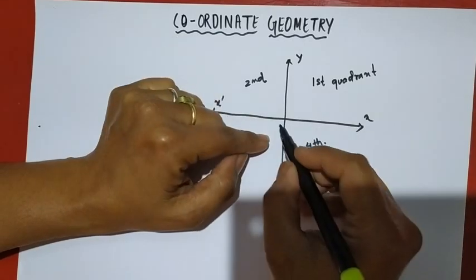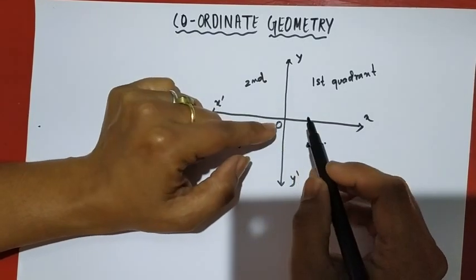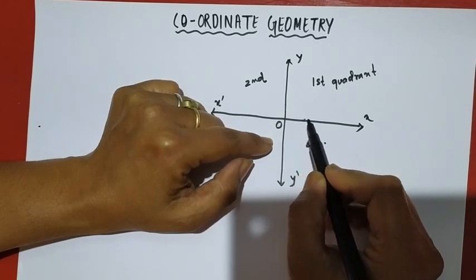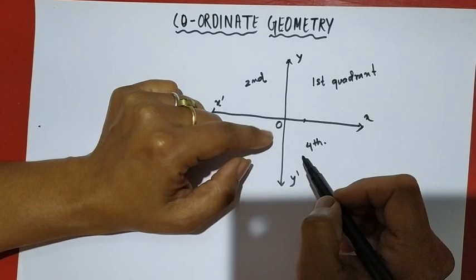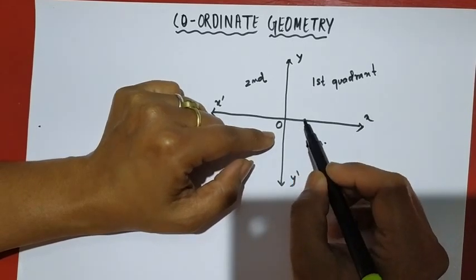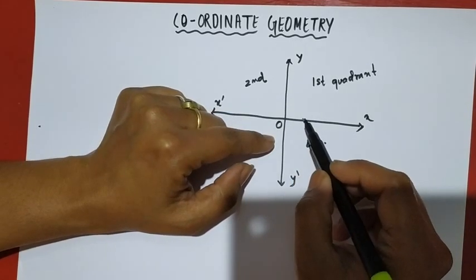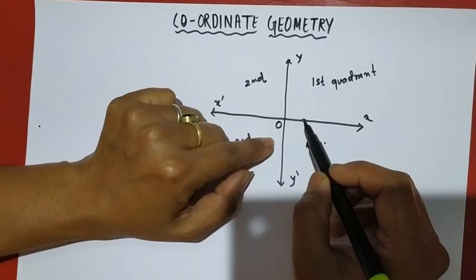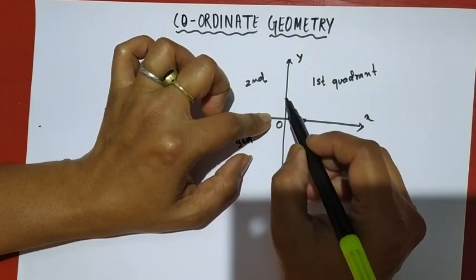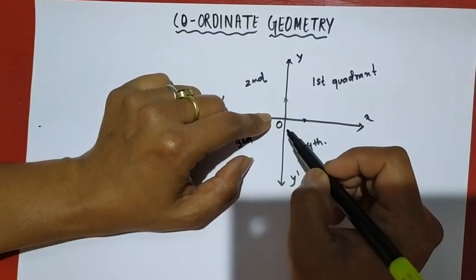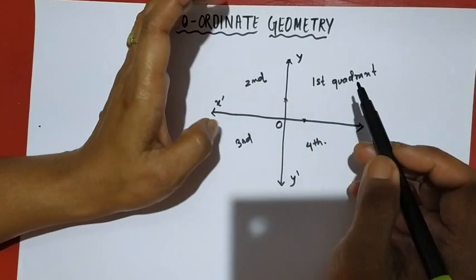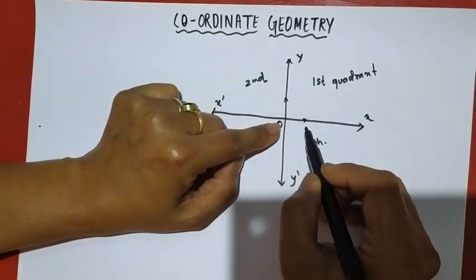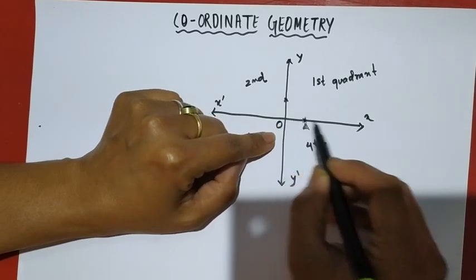The origin is the origin. The point is where the x-axis is 0 and y coordinates are 0. The point is 0.